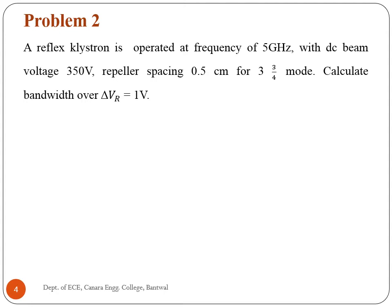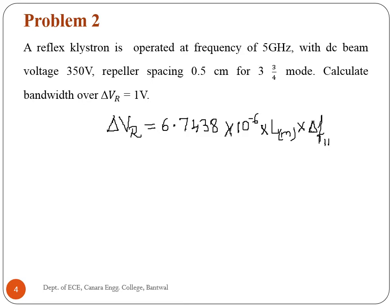Solution: we need to find out the bandwidth. Delta Vr is equal to 1 volt. We have the expression: delta Vr equals 6.7438 × 10⁻⁶ multiplied with the repeller space in meters, multiplied with delta f in hertz, multiplied with the square root of V0, divided by mode N.